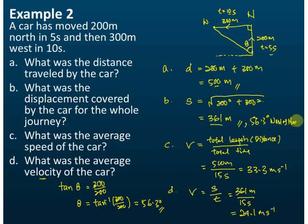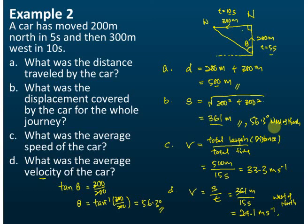So the direction is 56.3 degrees west of north. West of north means 56.3 degrees west from the north. Always remember, when you are asked to state displacement or velocity, you must tell both the magnitude and the direction. If you only state the magnitude, you lose the mark for the direction. Make sure to always state the magnitude and direction for vector quantities such as displacement and velocity.